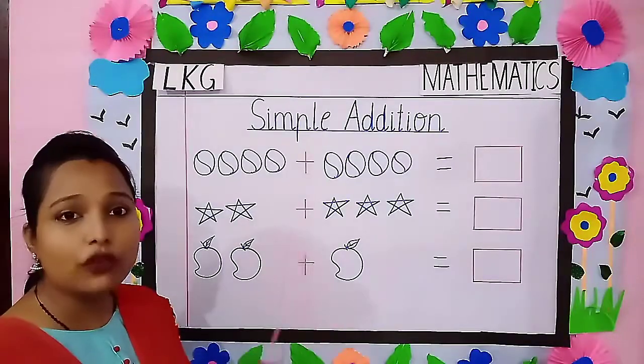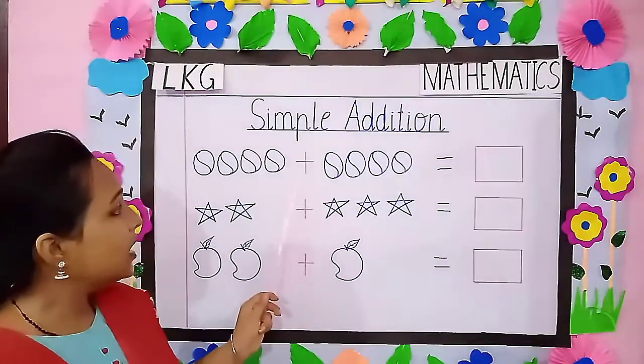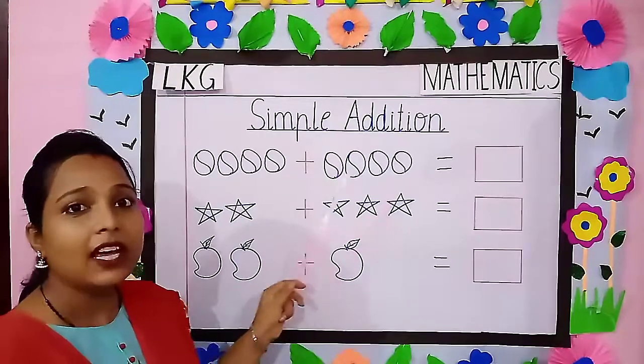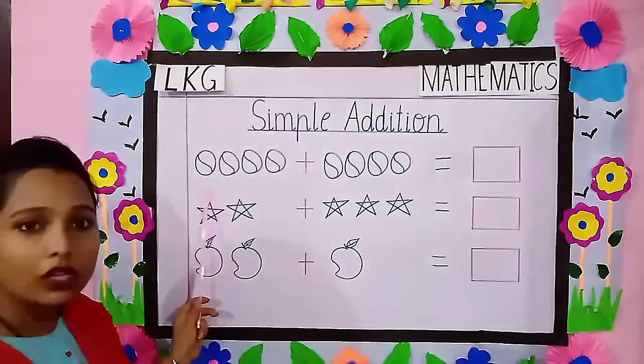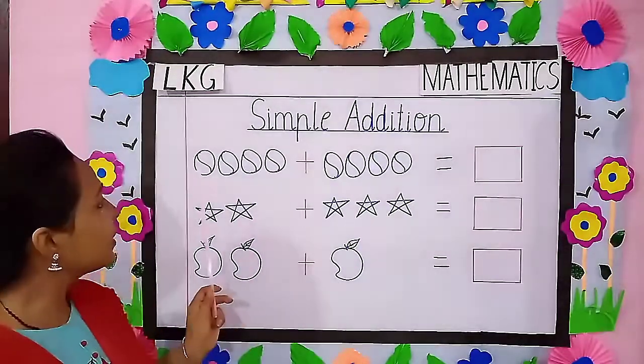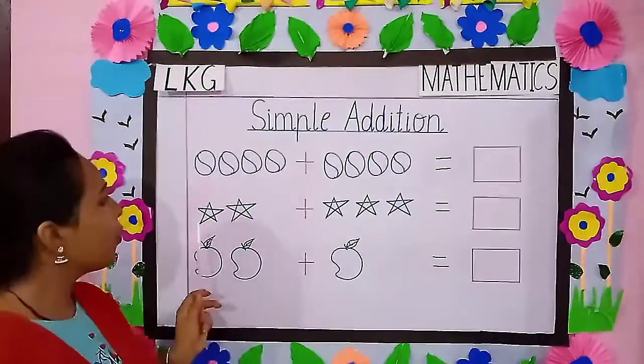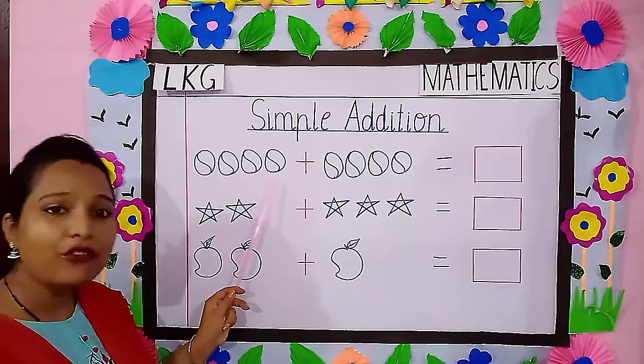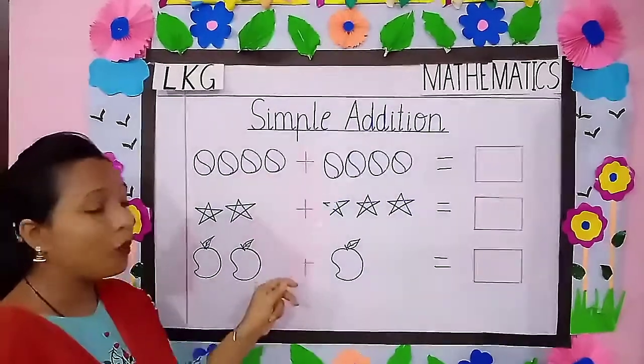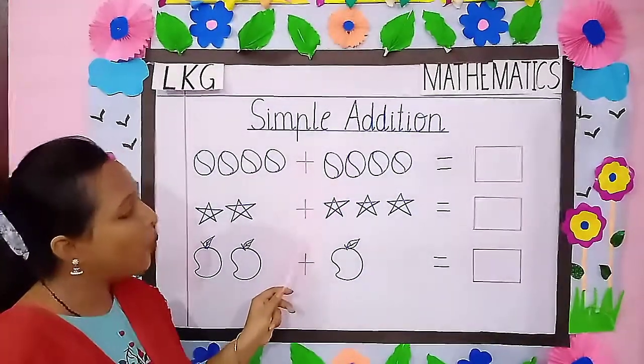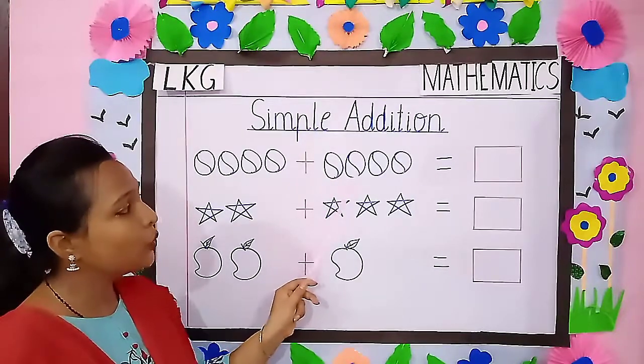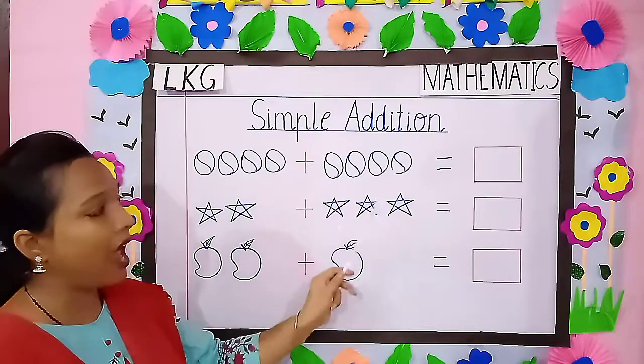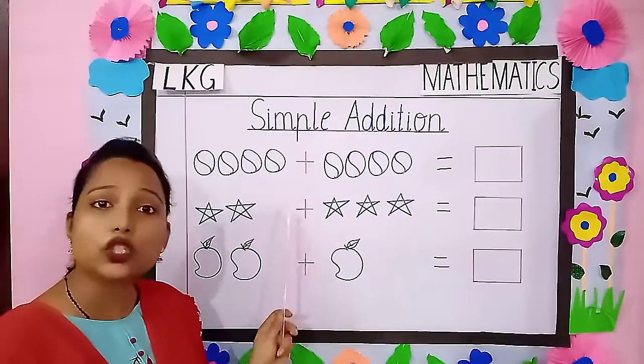You see objects over here. Yes. Now here are balls before the plus sign and after the plus sign. Come, let us count the balls. How many balls are here before the plus sign? 1, 2, 3 and 4. Now we have to add these balls all together.